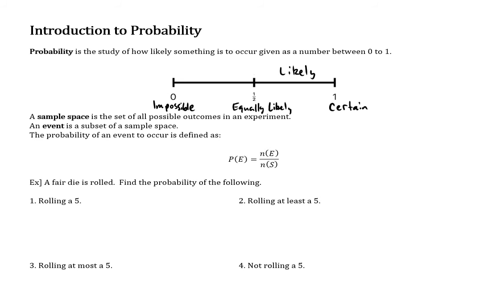Something in between one-half and 1 is likely. In between 0 and one-half would be unlikely. Say there's a 70% chance of rain tomorrow — we would say it's likely going to rain. If it's only 10% chance to rain tomorrow, we would say it's unlikely that it's going to rain.